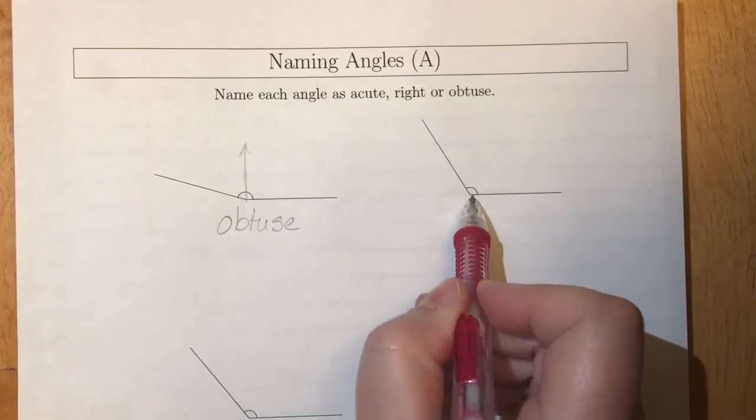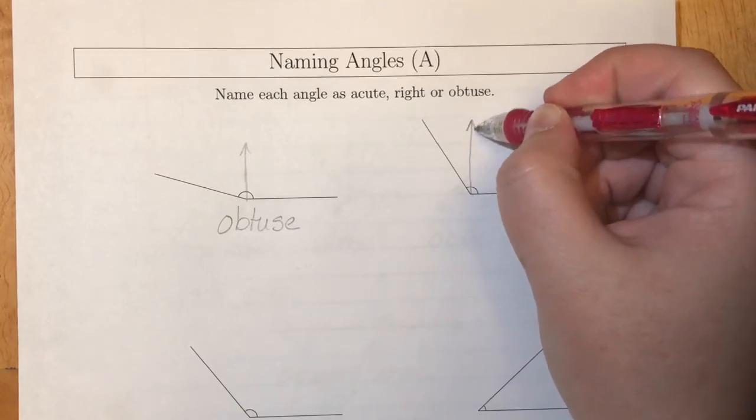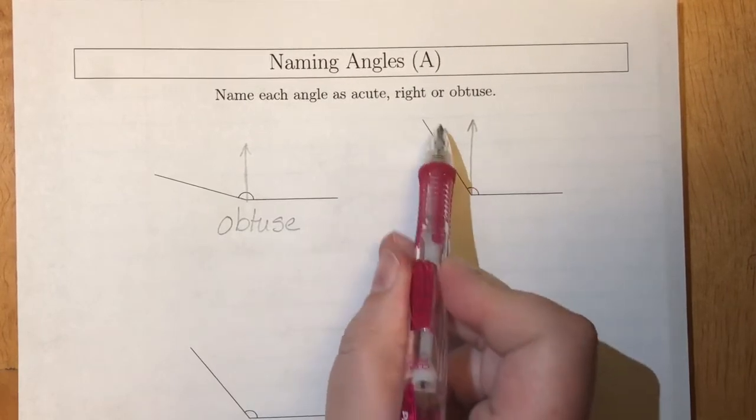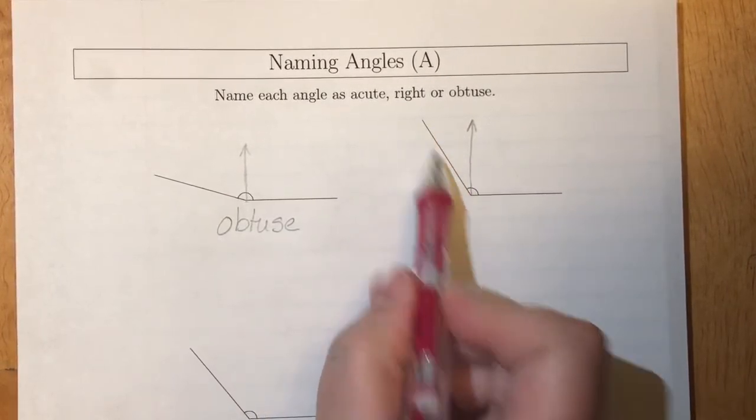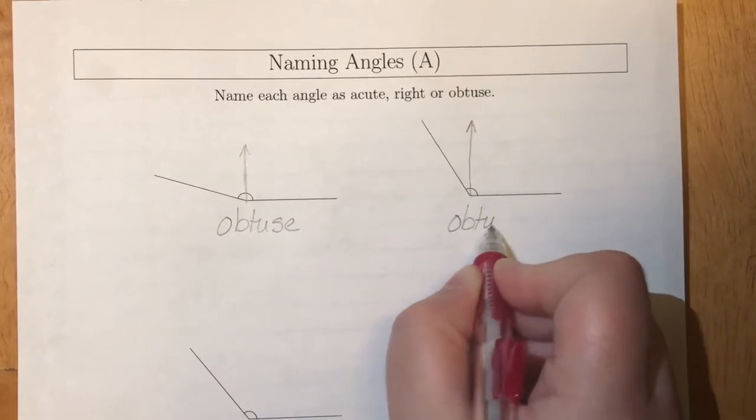If we take a look at this angle I'm going to draw that ray coming straight up. Again I'm way over here. I'm greater than that right angle so this is also an obtuse angle.